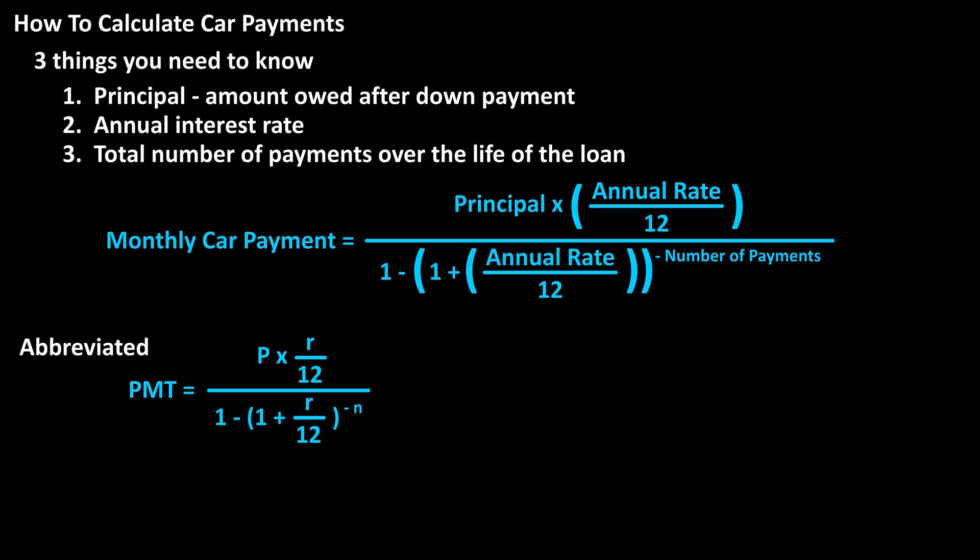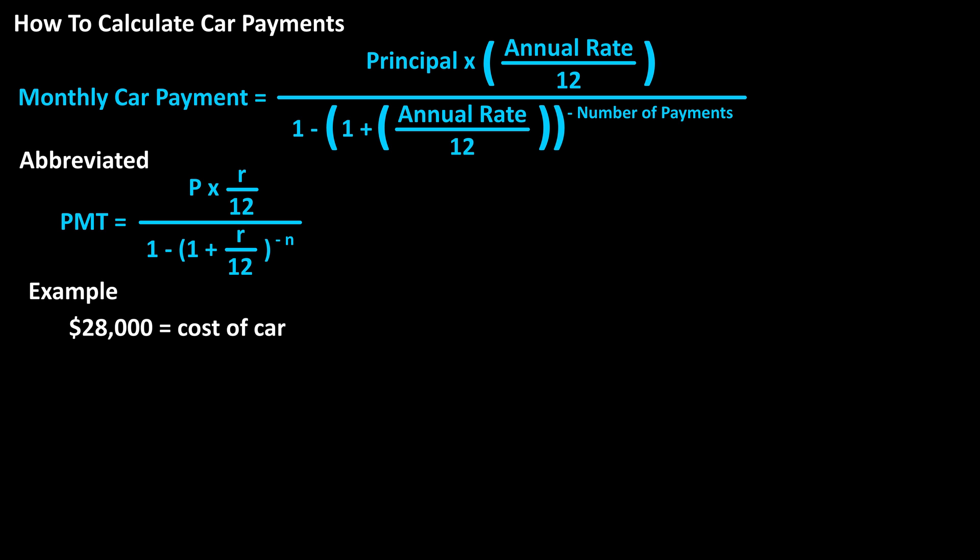Let's go through an example. If someone buys a car for $28,000 and puts a down payment of $5,000, the annual interest rate is 5.4%, and the loan is for five years, what is the monthly car payment?